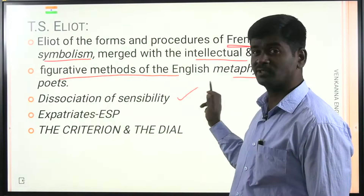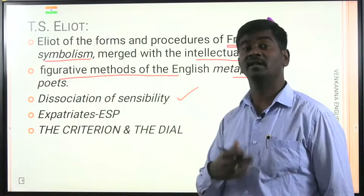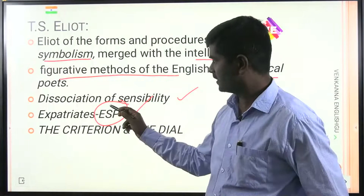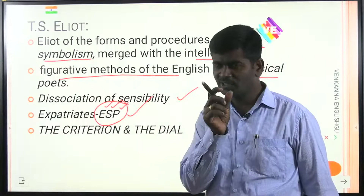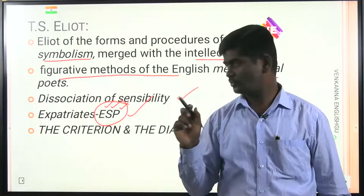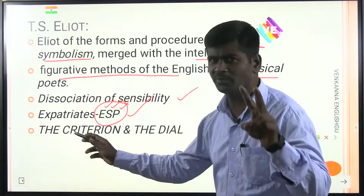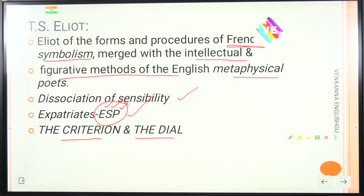Eliot mixed Symbolism with the intellectual and figurative methods of the English Metaphysical poets. He is known for techniques like 'dissociation of sensibility' and 'objective correlative.' Three writers are considered expatriates: T.S. Eliot, Gertrude Stein, and Ezra Pound. Eliot is also known for publishing his works in two important magazines: 'The Criterion' and 'The Dial.'